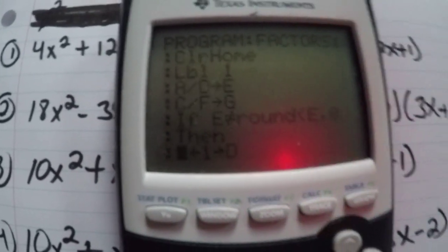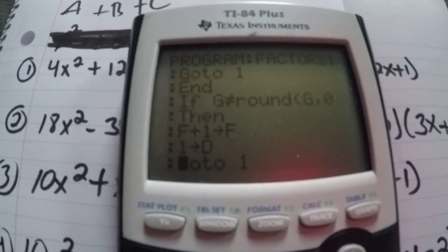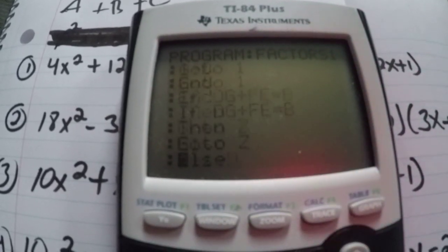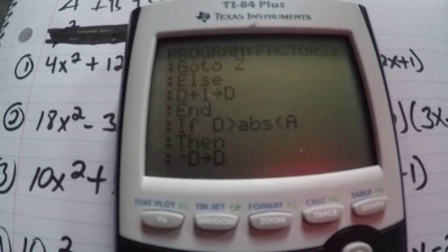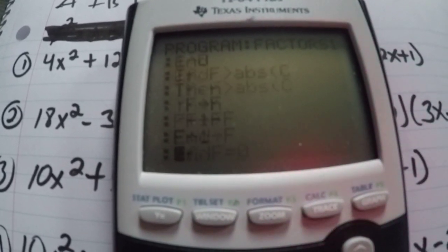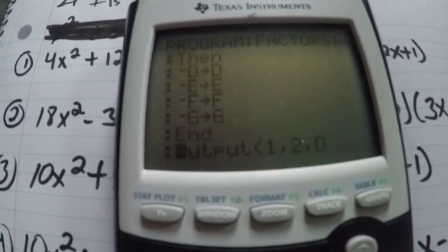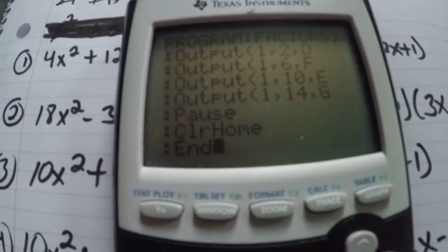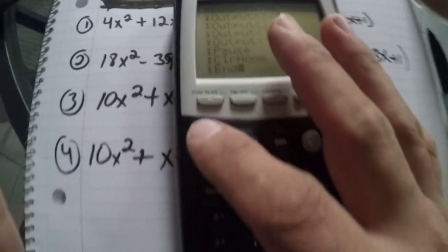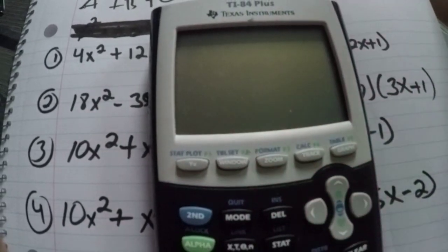And once you get it to work, factoring will be so much easier. I will put it in my description so you can have an idea of what to put in your calculator. It's really long. And that's how long it goes. Then you quit it and then you basically hit F2 and you hit on. It will turn off and save it.